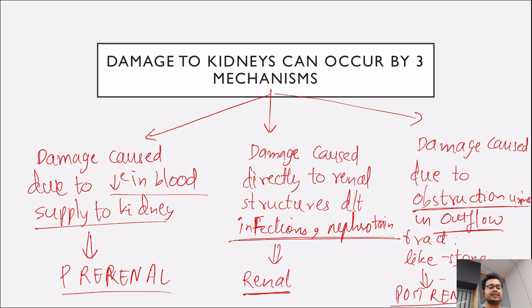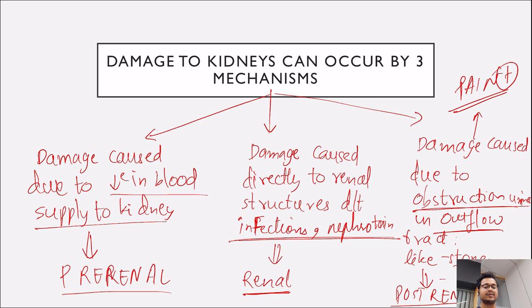In our exams we can differentiate pre-renal and renal cause from post-renal cause just by looking at pain. If pain is present it is post-renal, and if pain is absent it is renal or pre-renal. So if there is a patient who comes with painless hematuria, the cause will not be post-renal — it will be pre-renal or renal. But if a patient comes with painful hematuria, the cause will be post-renal.